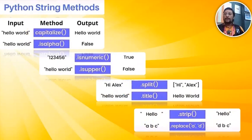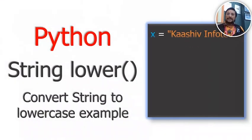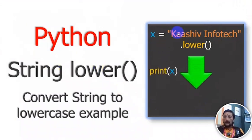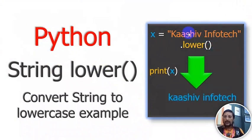We will do that in this video. For example, in Python there is a string lower method. X is equal to 'Kashiw Info Technoport'.lower(). You can print all capital letters as small letters. This is a convert-string-to-lowercase example.